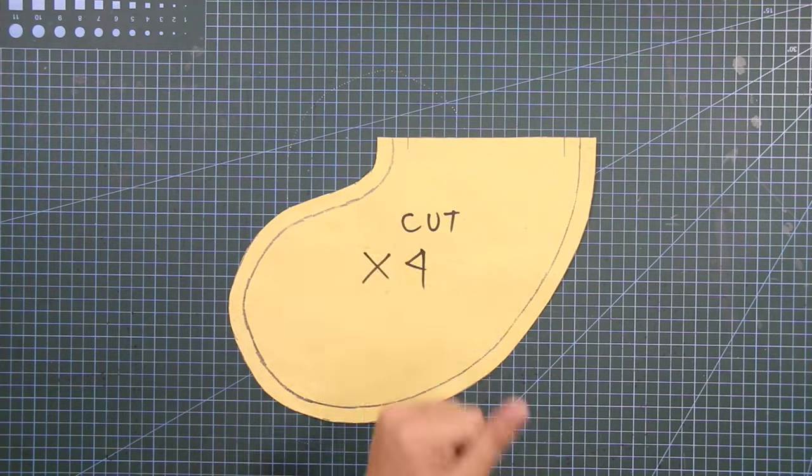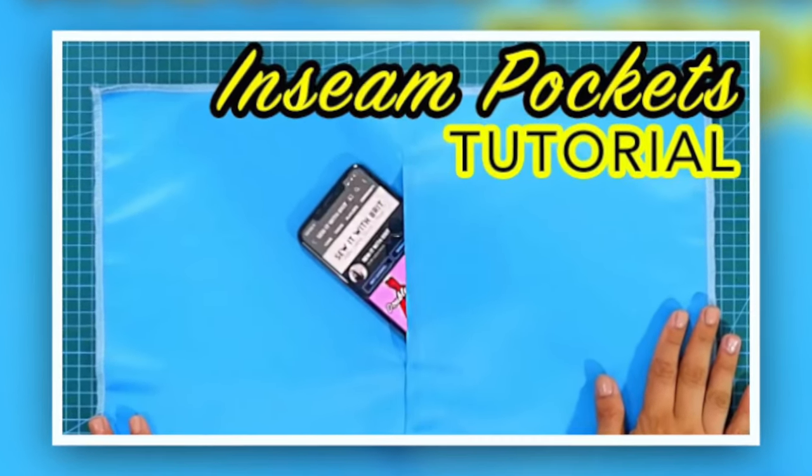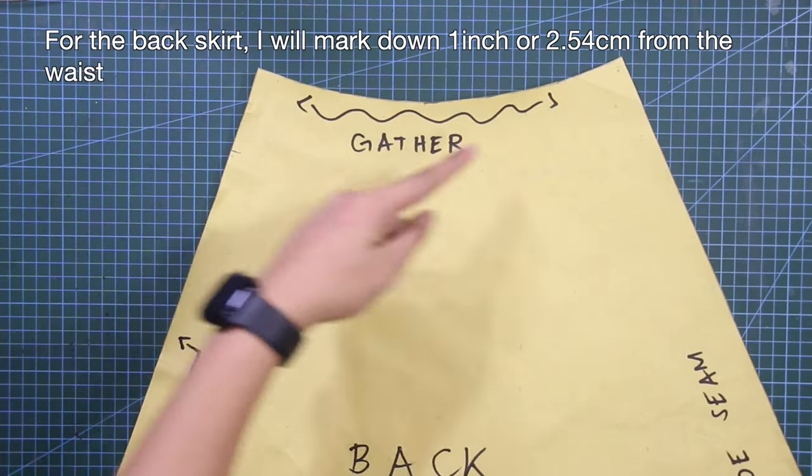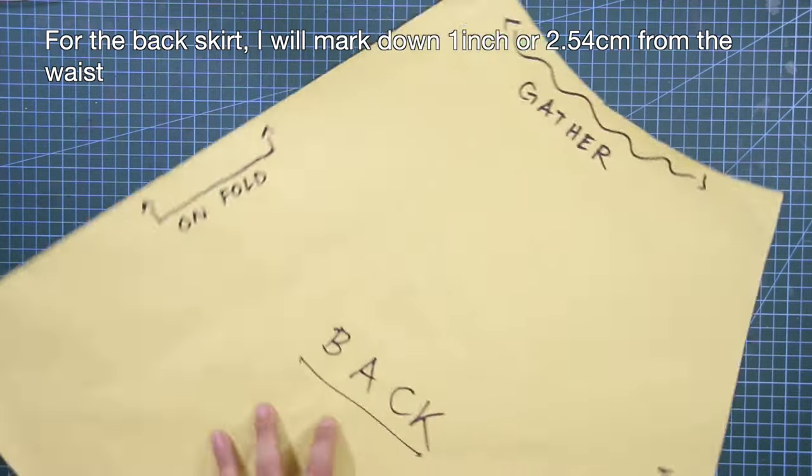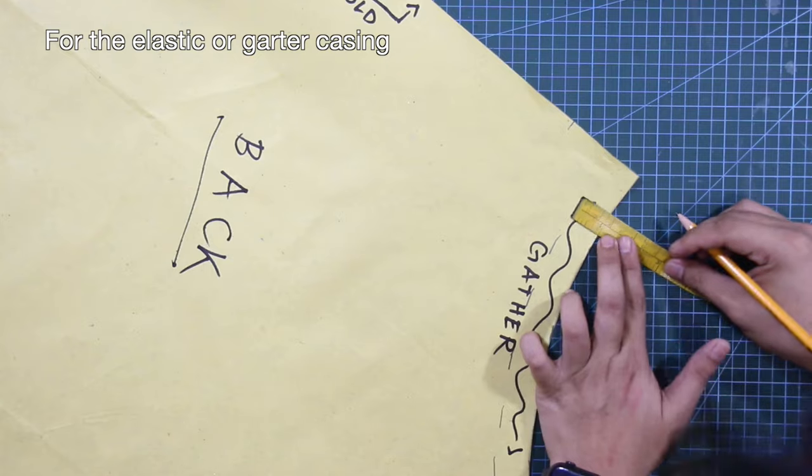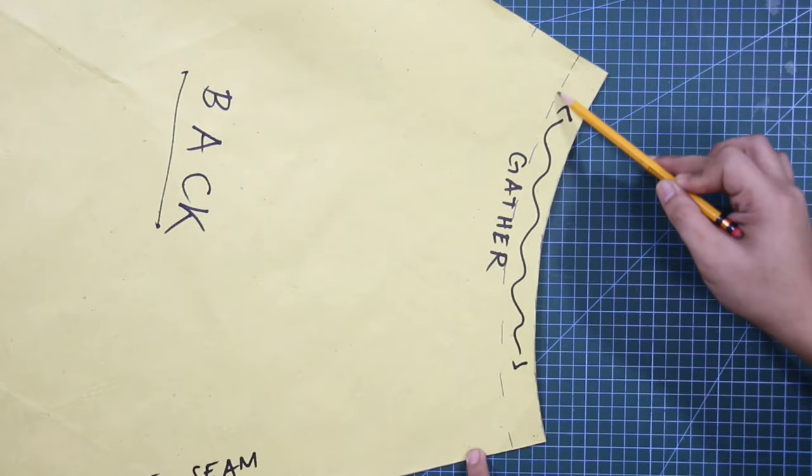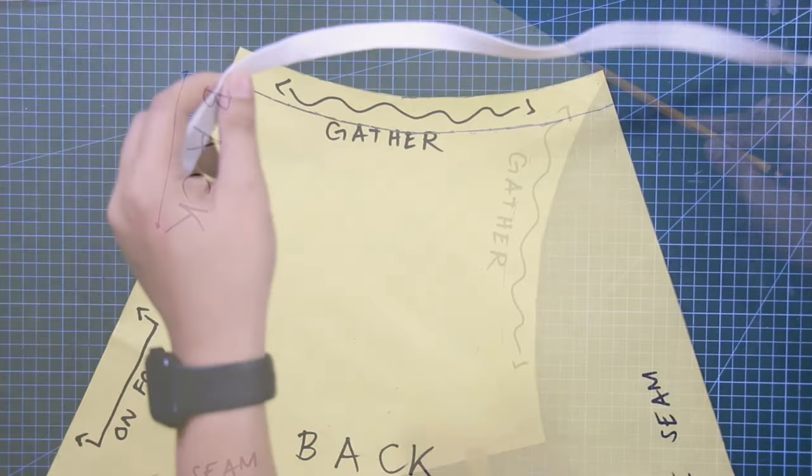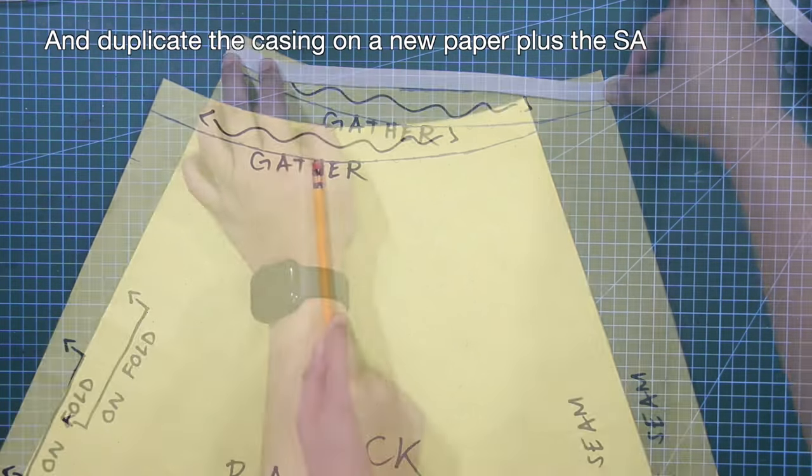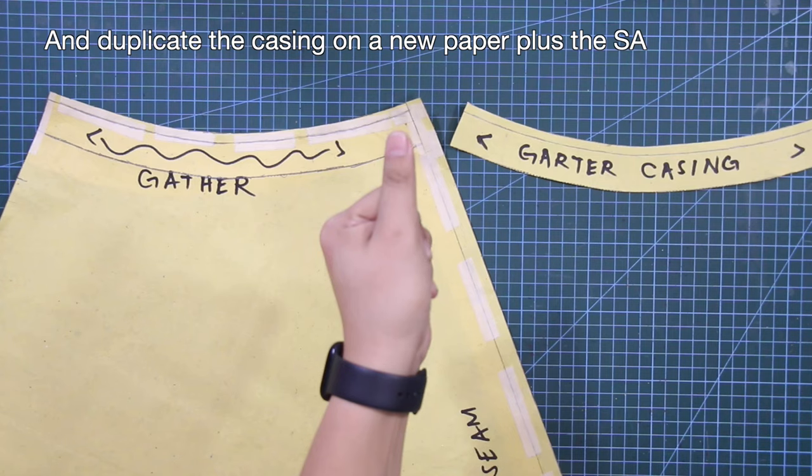To learn more about in-seam pockets I have a separate tutorial, make sure to check it out on my channel. For the back skirt I will mark down 1 inch or 2.54 centimeters from the waist. This is for the elastic or garter casing. Duplicate the casing on a new paper plus the sewing allowance from the back skirt.